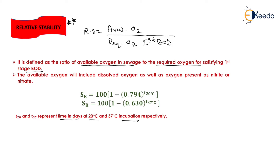Now if we kept the sample at 37 degrees Celsius incubation, the formula will be: Relative Stability = 100 × (1 − 0.630^T) at 37 degrees Celsius, where T is the time in days at 37 degrees Celsius incubation.